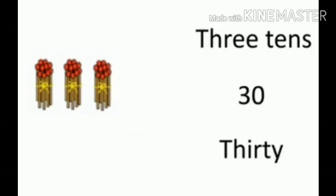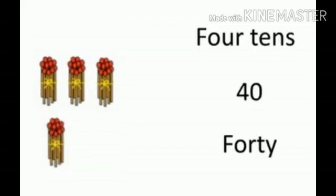Here, 3 bunches of math sticks are there. In that 3 bunches, there are 30 math sticks — 3 bunches means 3 tens. That is, 30, and the spelling of 30 is T-H-I-R-T-Y. Here, 4 bunches of math sticks are there. In that 4 bunches, there are 40 math sticks — 4 bunches means 4 tens. That is, 40, and the spelling of 40 is F-O-R-T-Y.